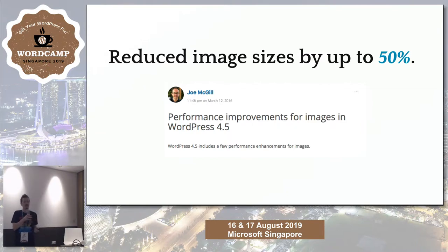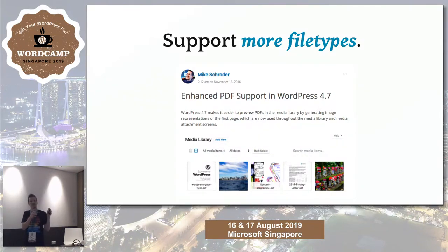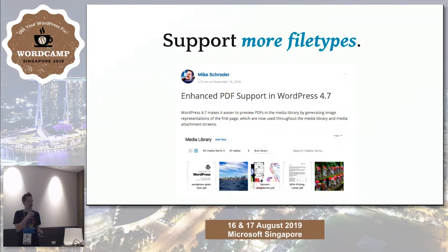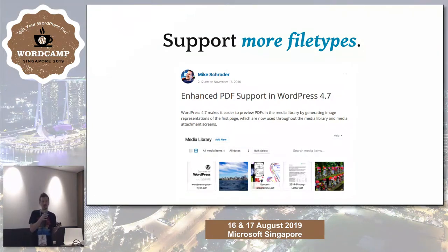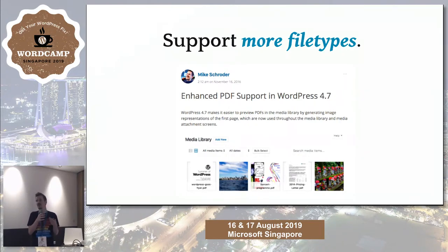Imagick also supports a lot more file types. As of WordPress 4.7, this is where PDF thumbnails come from — only Imagick can handle that. A lot of servers support many different file formats with Imagick and ImageMagick, and you can write code to parse those. You're not blocked from doing basic operations on images for any file type your system supports.